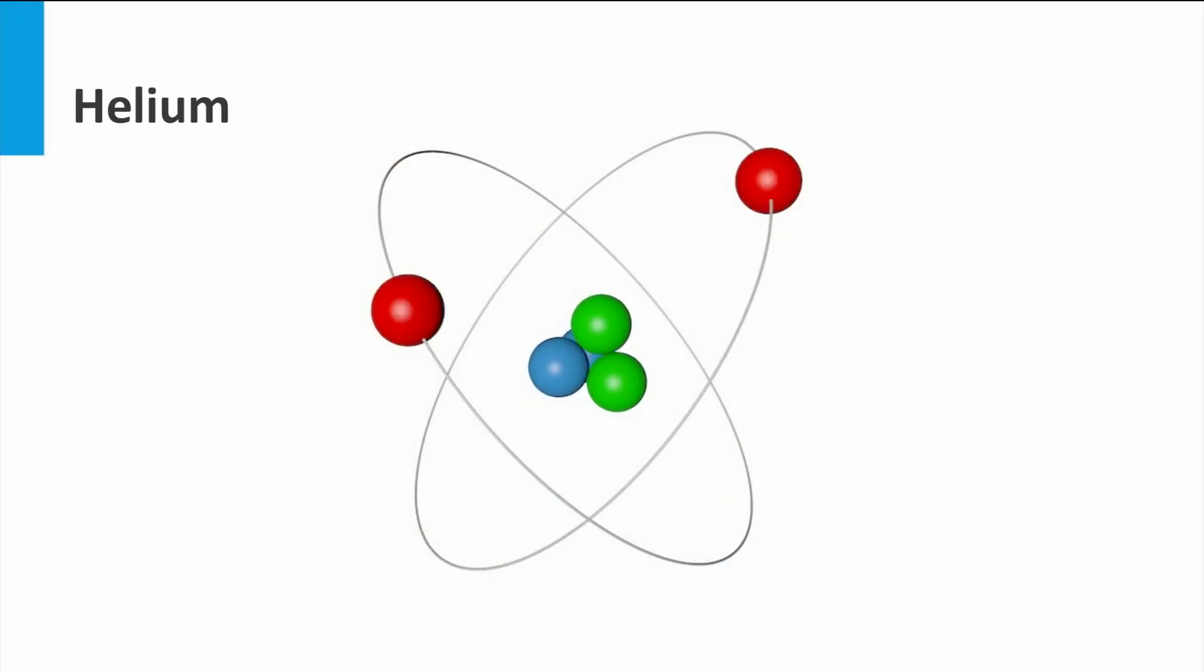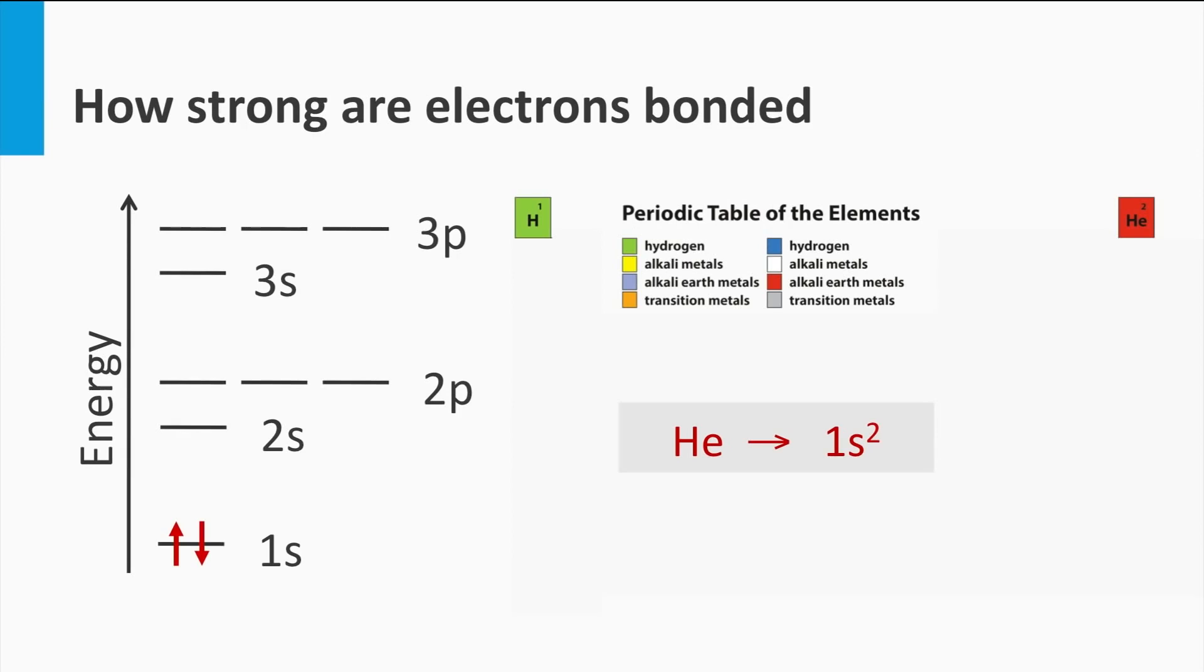In its nucleus it has two protons and two neutrons. Since neutrons do not have a charge, the charge of the nucleus is determined by the two positively charged protons. Around the helium nucleus two electrons are in orbit.